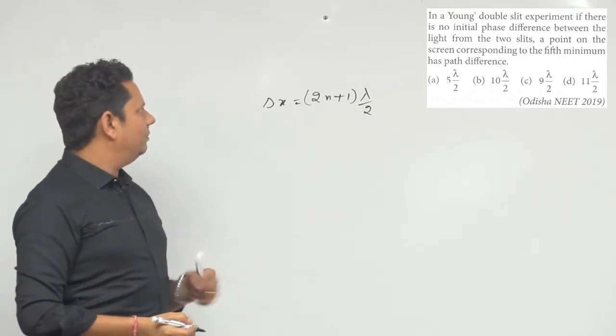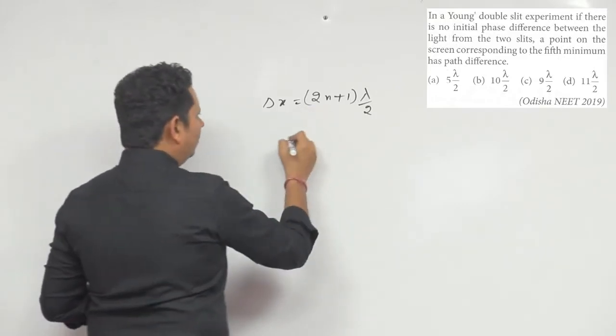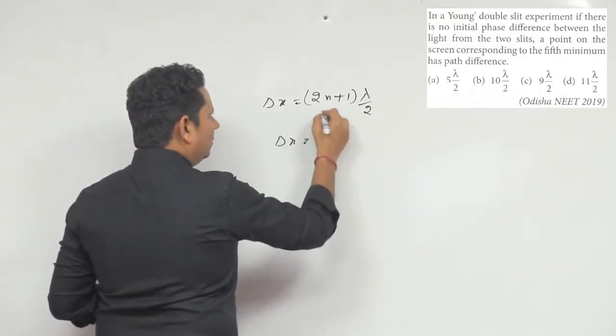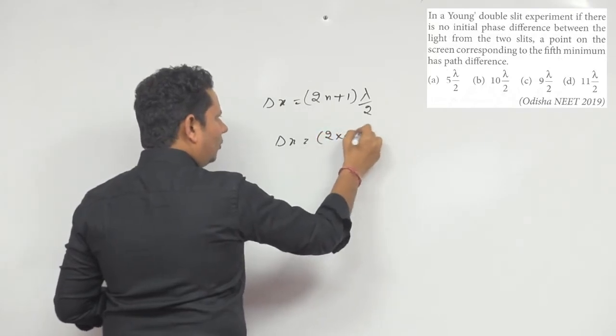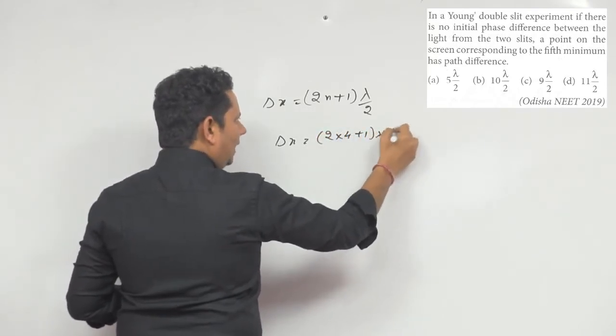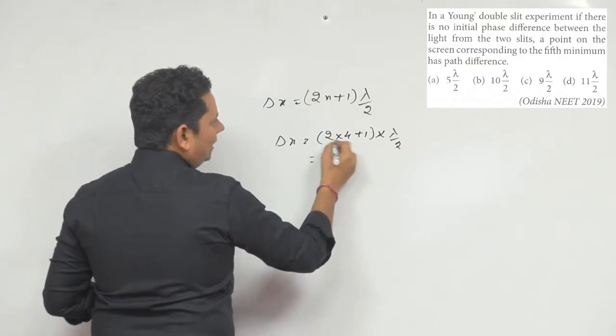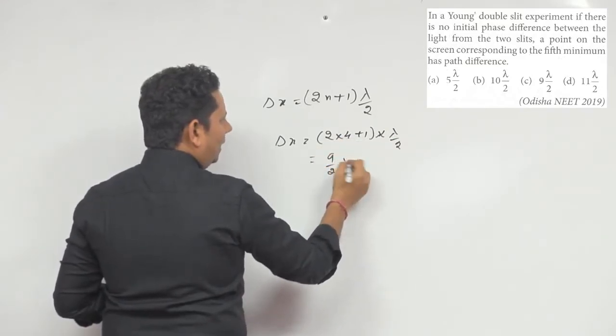We're given the fifth minima, so we'll write n value as 4. So delta x will be 2 multiplied by 4 plus 1 multiplied by λ/2. This gives us 9λ/2.